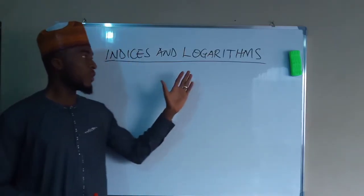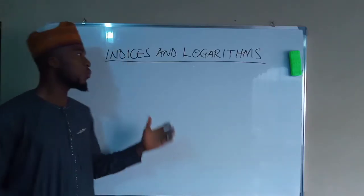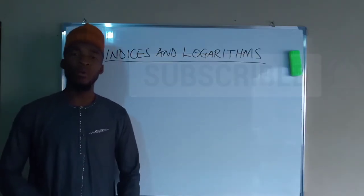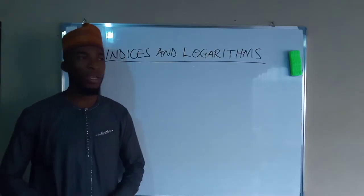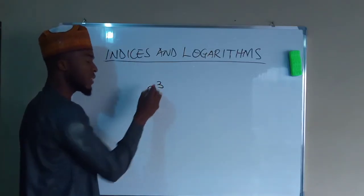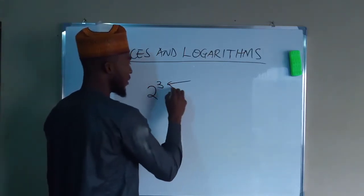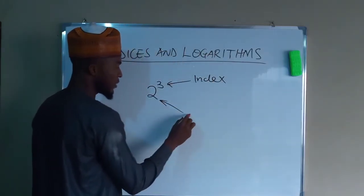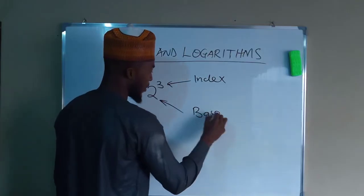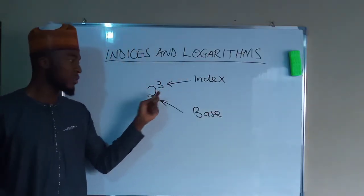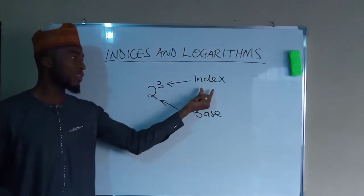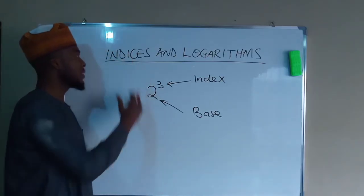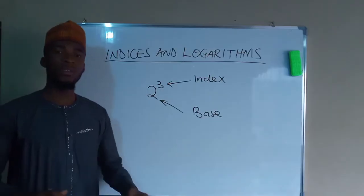To understand clearly what it means by logarithms, you need to know what it means by indices. Indices will not only guide you through the knowledge of logarithms, but also it will guide you in everyday arithmetics. If we have 2 to the power of 3, the three here is called the index, while the two here is the base. The number which is always raised onto another number is called the index, and indices is just the plural of index.